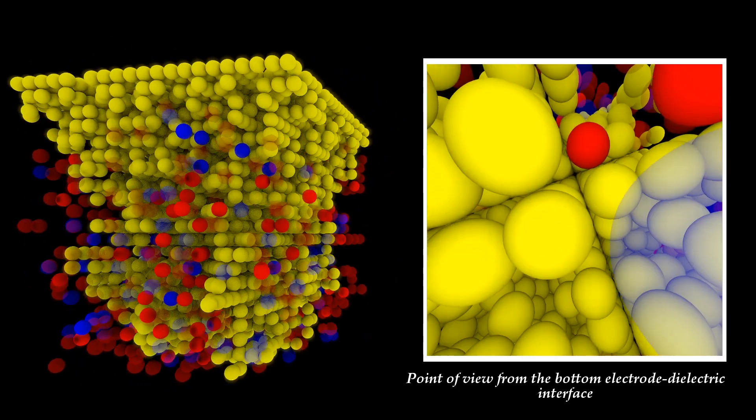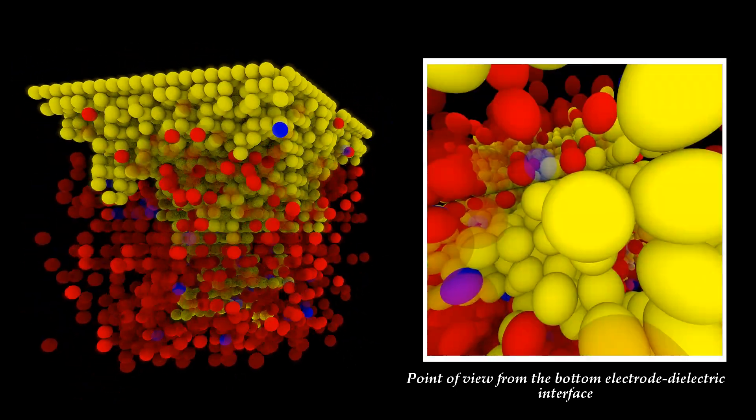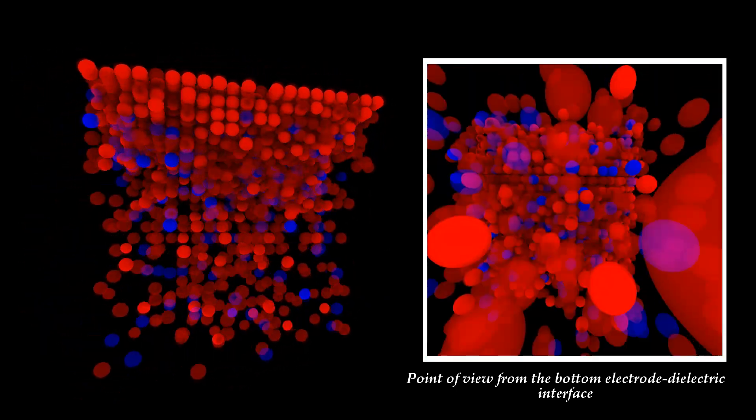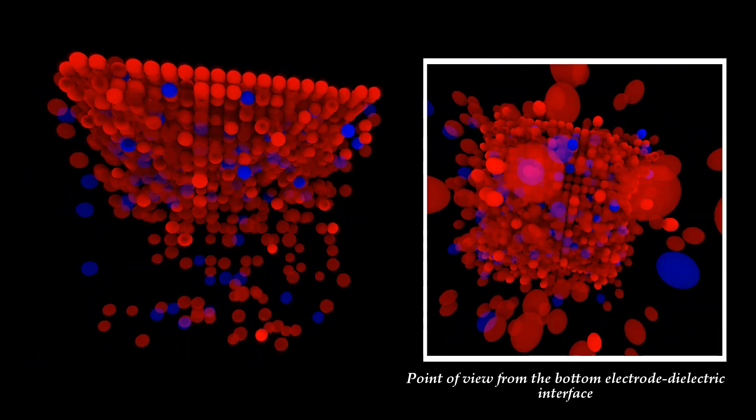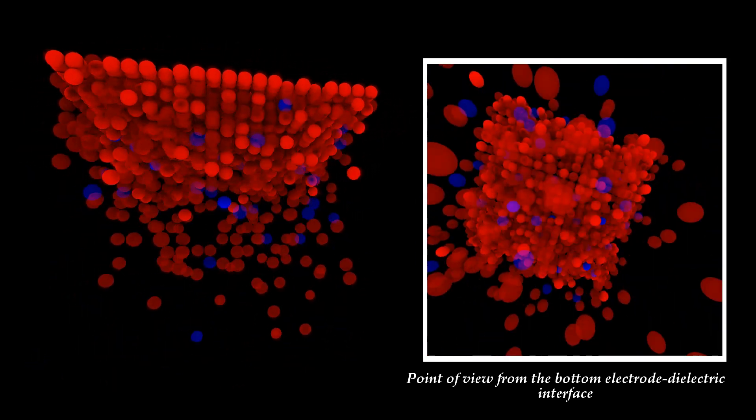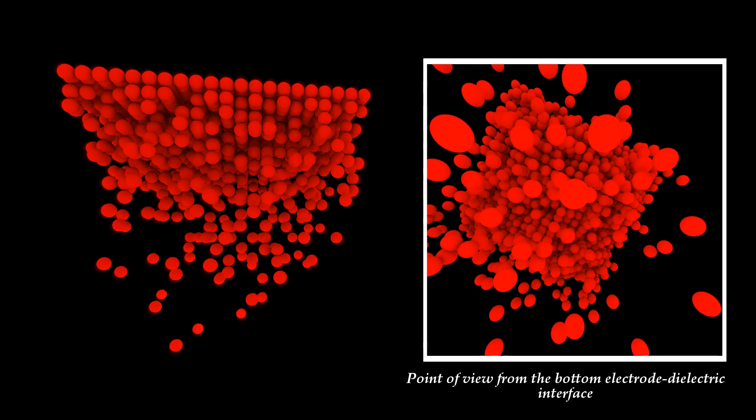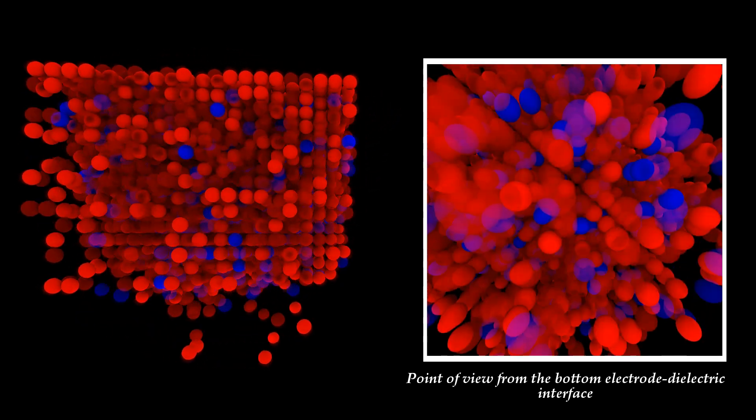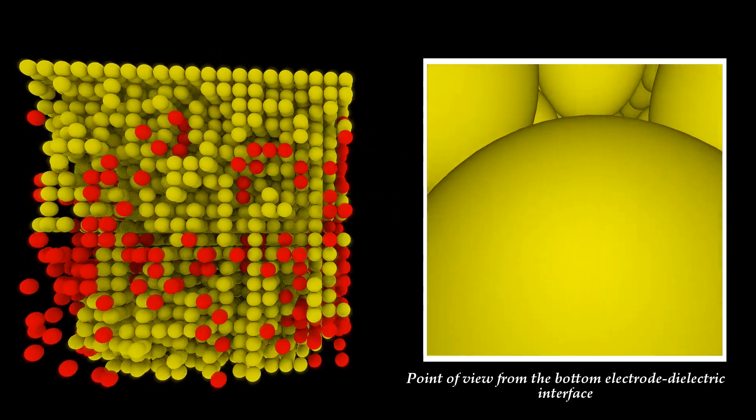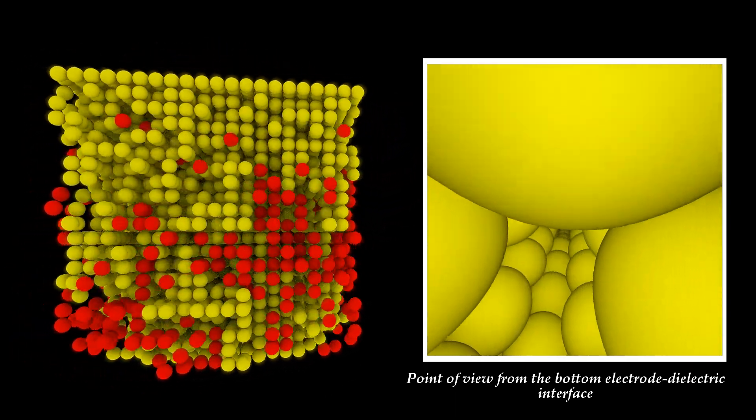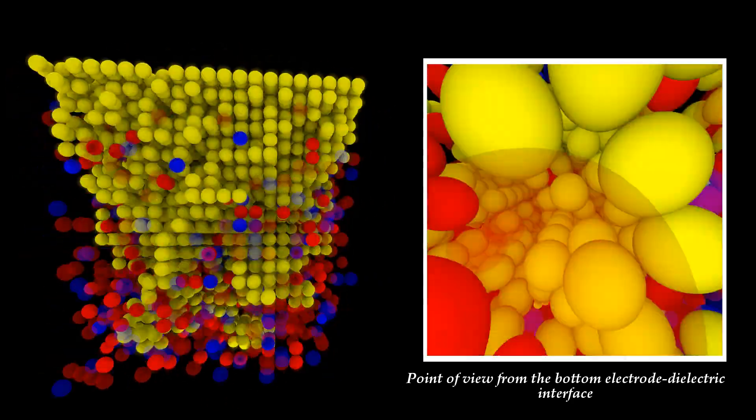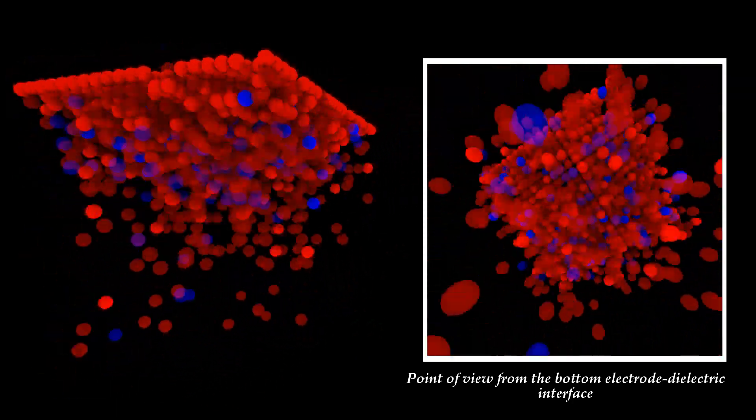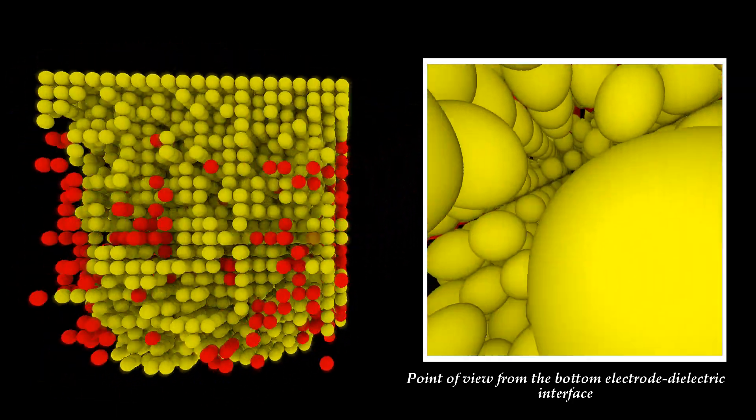The reset process is due to the joint contribution of thermal diffusion and electric field driven drift. After the reset a set process starts in the bipolar operation regime of these resistive RAMs and the filament is formed again using the remnants of broken filament as a starting point. In this manner complete resistive switching cycles can be simulated.